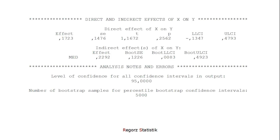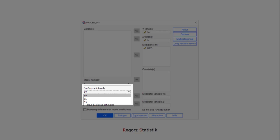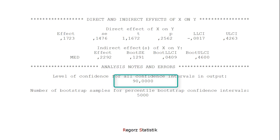What we have to do is construct a confidence interval for a one-tailed test. We can do that by requesting a 90% confidence interval from PROCESS instead of the default 95% confidence interval, and then using just one of the two limits. If you want to change the confidence level in PROCESS, you can do this here, or if you use syntax, you can use the conf parameter. Now we get a confidence interval with a confidence level of 90%.